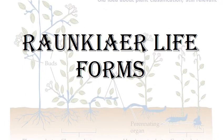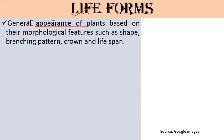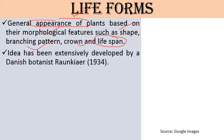Today we'll discuss Raunkiaer's life forms, which comes under the topic of plant communities. Life form is the external appearance or morphological appearance — the shape, branching pattern, and lifespan of the plant. It is the general appearance of a plant based on its morphological features, which are externally visible characteristics such as shape, branching pattern, crown, and lifespan. This idea was extensively developed by Danish botanist Raunkiaer in 1934.